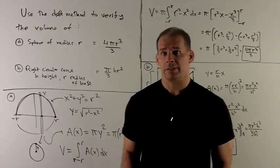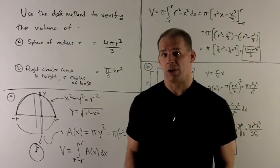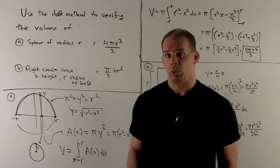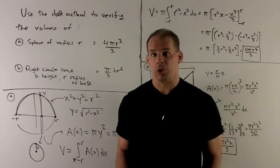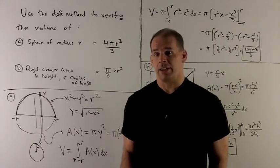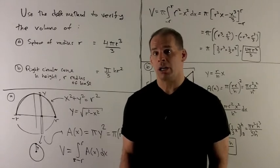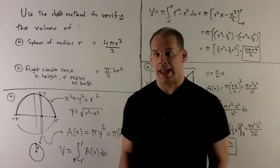Use the disk method to verify the volume of the sphere of radius r, which is four-thirds pi r cubed. And then we'll use it to verify the volume of the right circular cone with base radius r and height h, which is one-third pi h r squared.